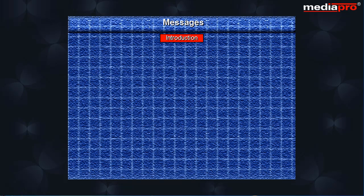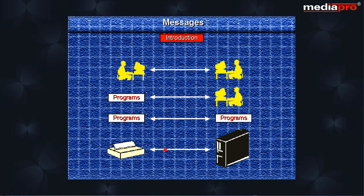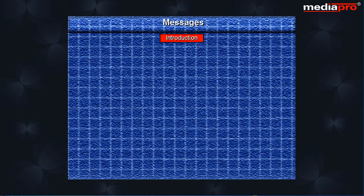Messages are the main means of communication on the AS400. Users communicate with other users, programs communicate with users, programs communicate with other programs, and devices communicate with the system through messages. You have different types of messages such as Completion,